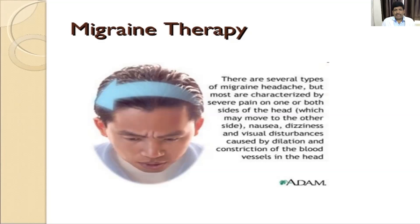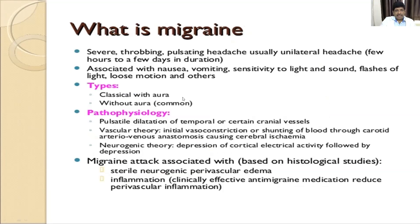Different types exist, but most commonly the person feels a one-sided headache. There are several types of migraine but most are characterized by severe pain on one or sometimes both sides of the head, which can move from one side to another. Nausea, dizziness, and visual disturbance may be there, and it can be caused by dilatation or constriction of blood vessels in the head. Migraine is a severe, throbbing, pulsating, usually unilateral headache lasting from a few hours to a few days.